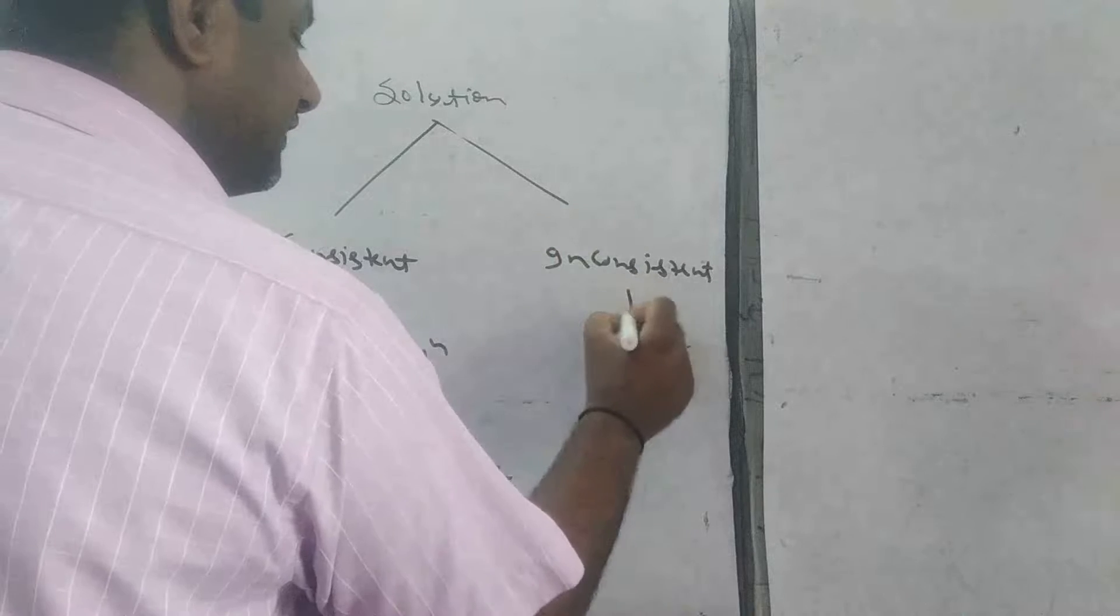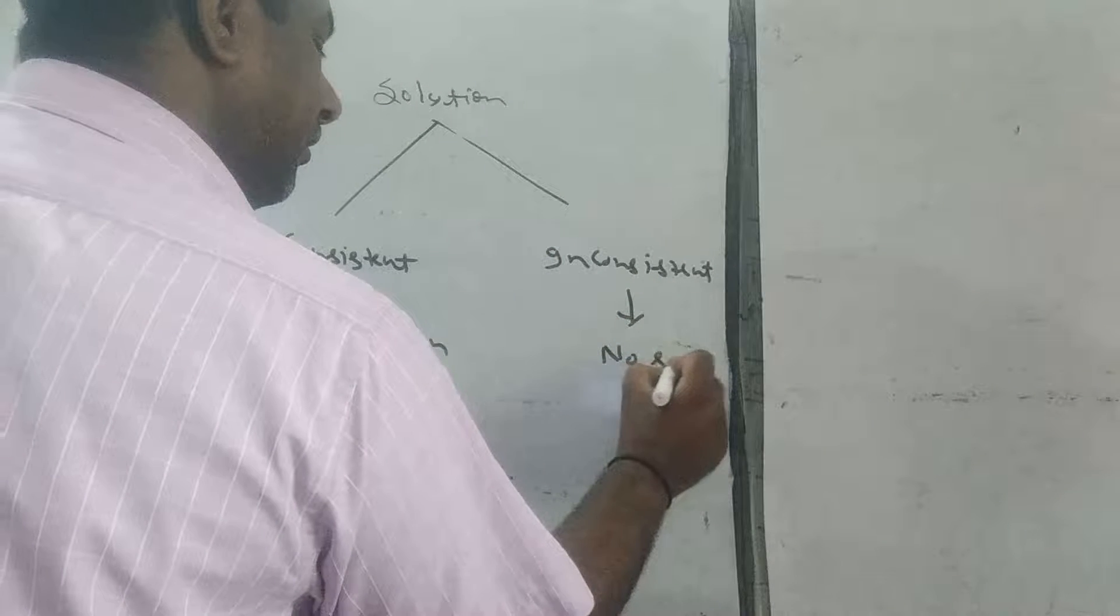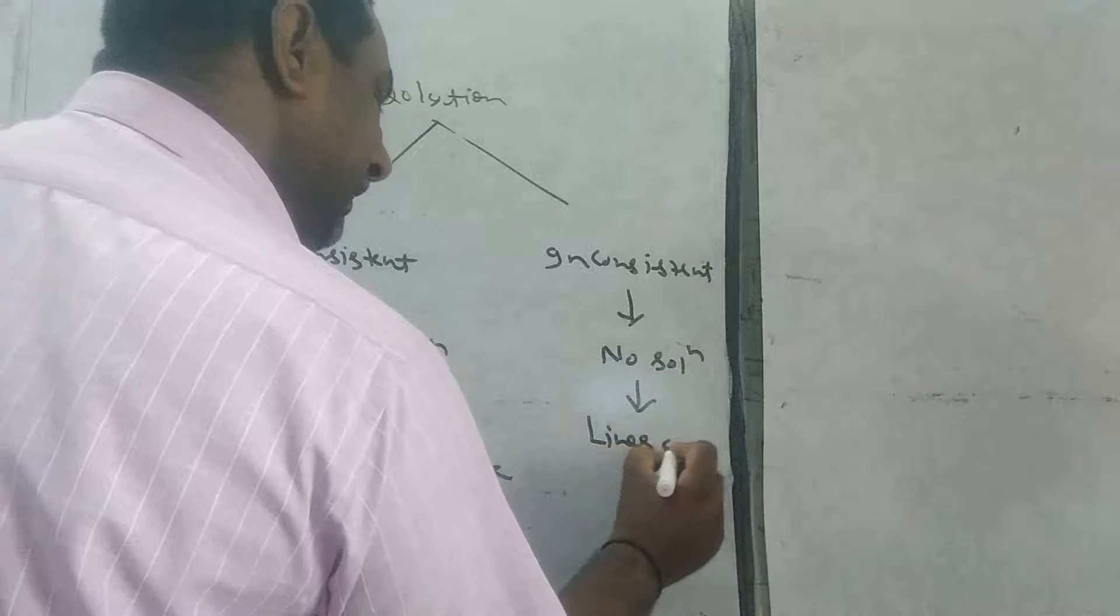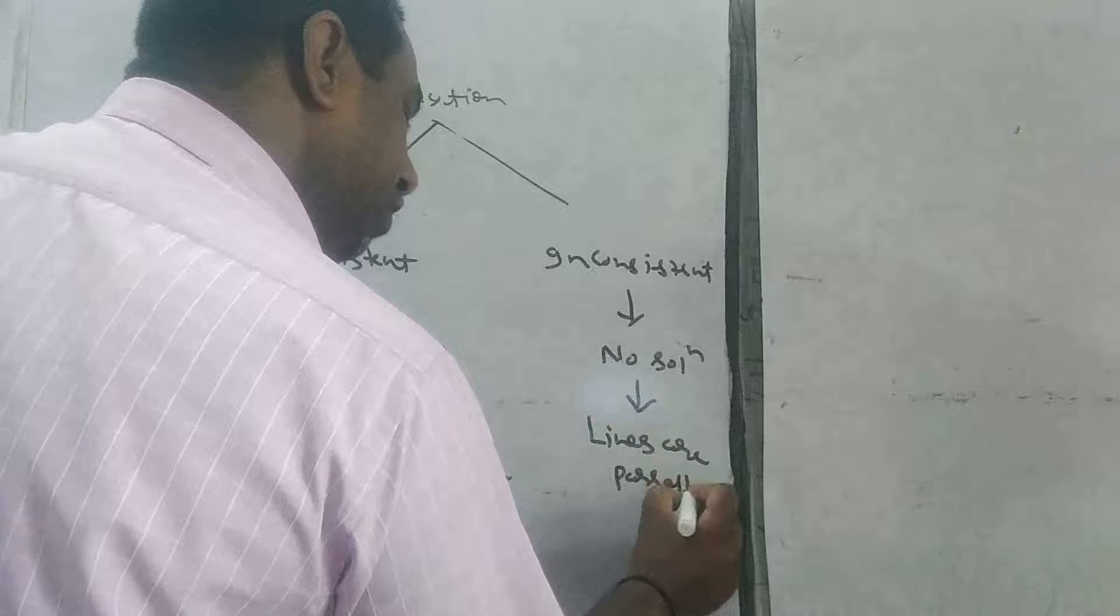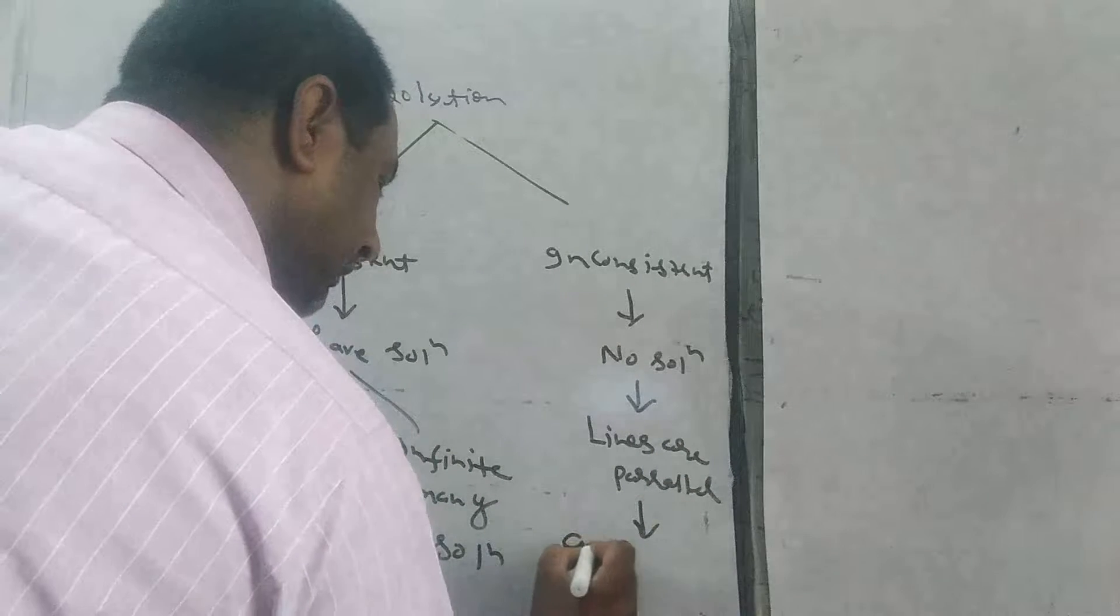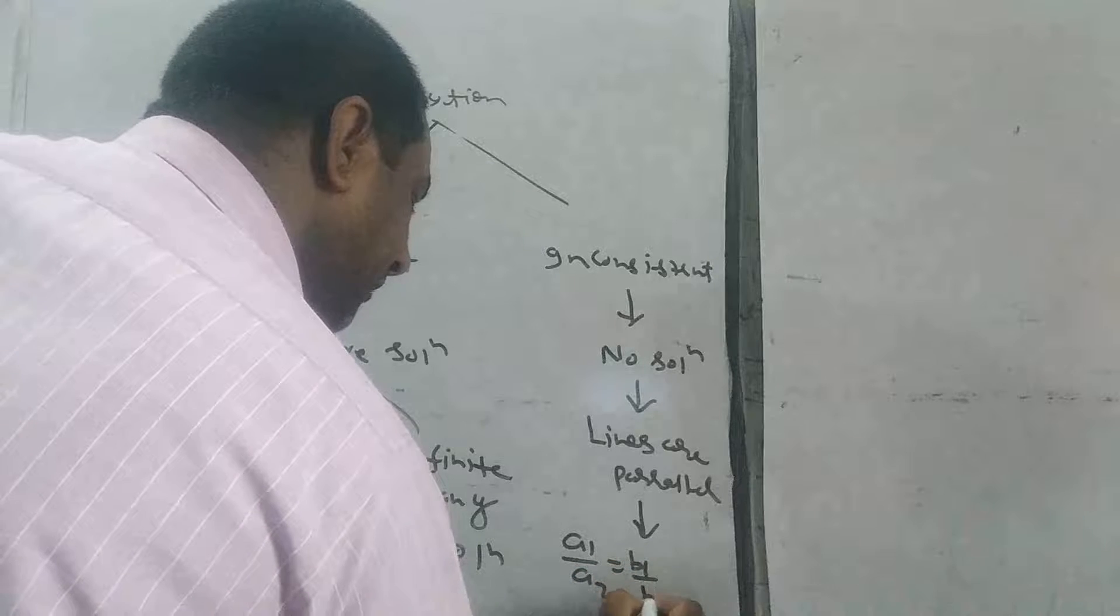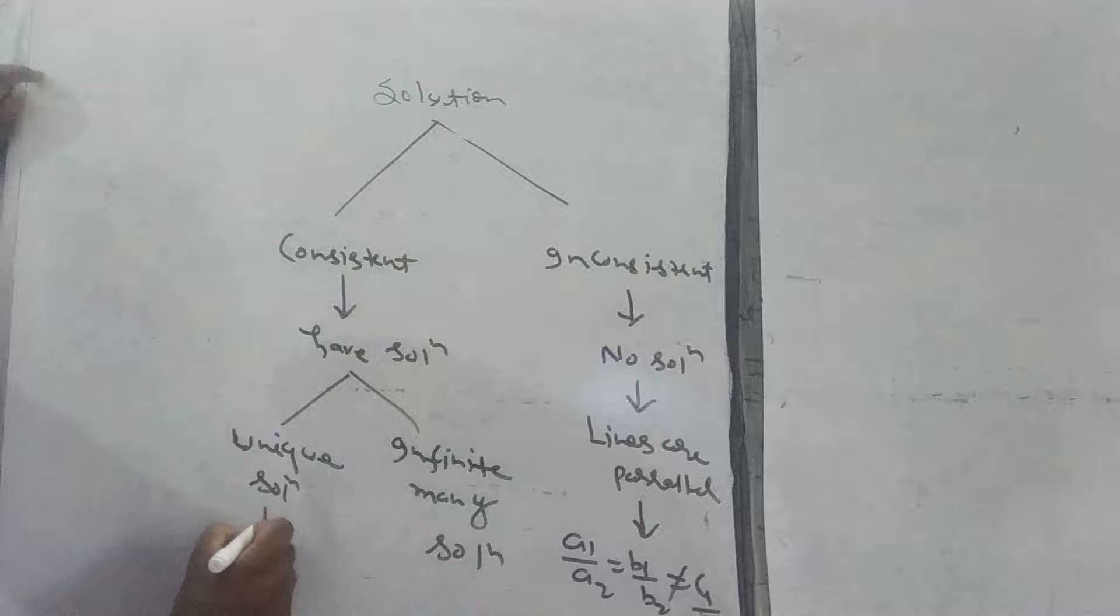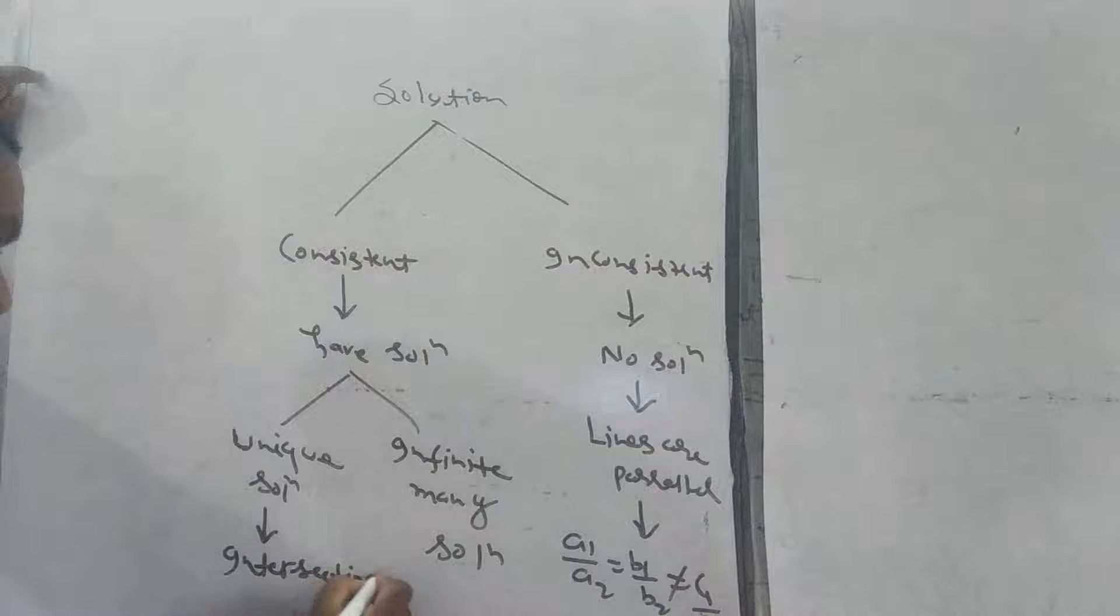Inconsistent means no solution, means lines are parallel. What is the condition for no solution? The condition is A1 by A2 equals B1 by B2 not equals C1 by C2. What is the condition for unique solution? It is intersecting lines and the condition is A1 by A2 not equals B1 by B2.